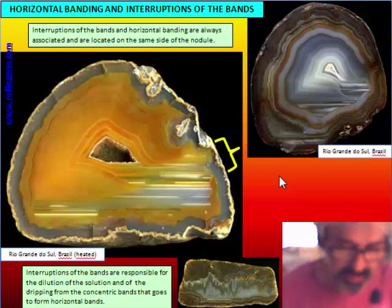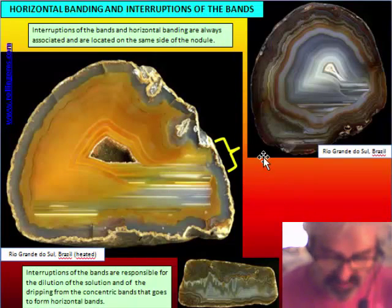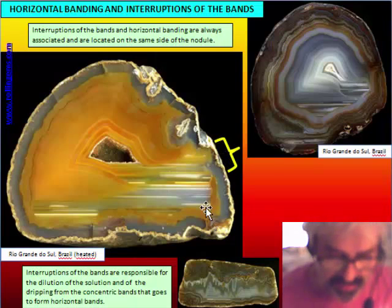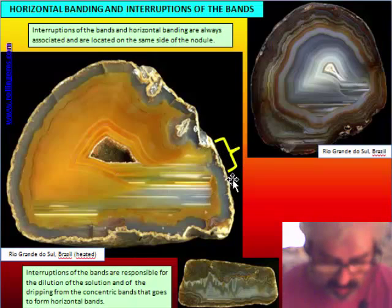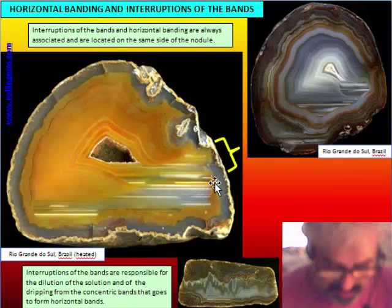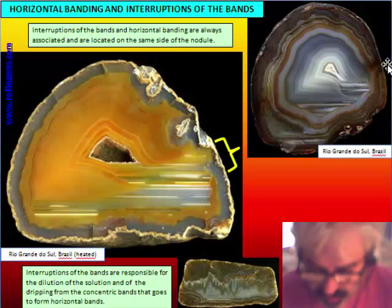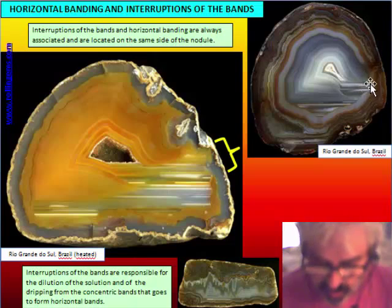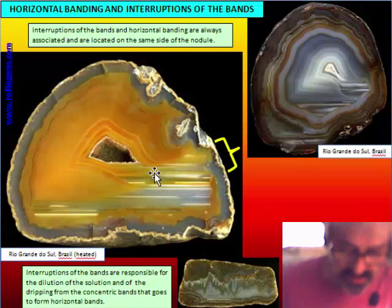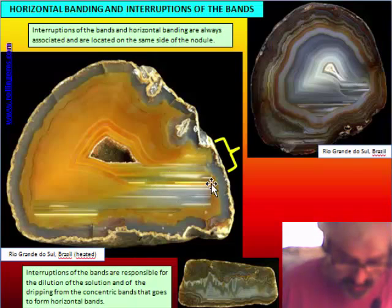By analyzing many samples, we arrive at the conclusion that there is a relation between interruption of the band and horizontal banding. Always when we have horizontal banding inside a nodule, we can observe an interruption of the band on one side of the nodule — usually on the side where the horizontal banding is. Here we have an interruption, and on this side of the nodule we have the horizontal banding. The bands are horizontal to the right and more concentric to the left.